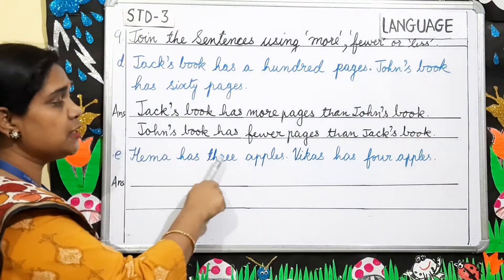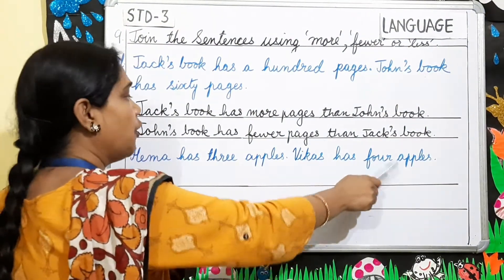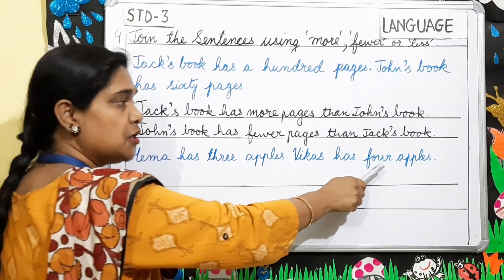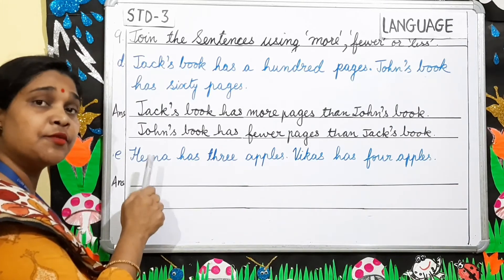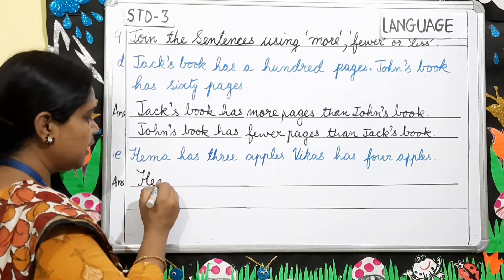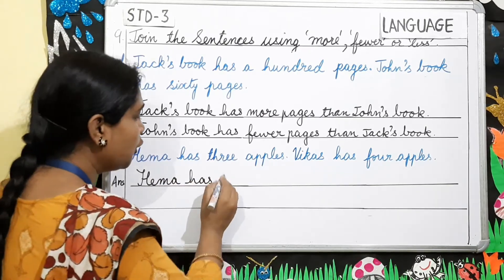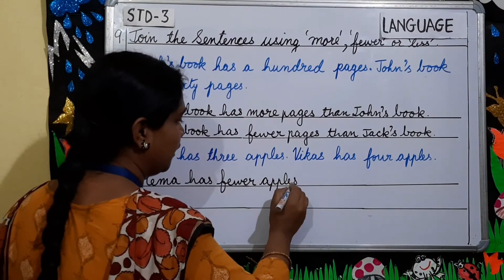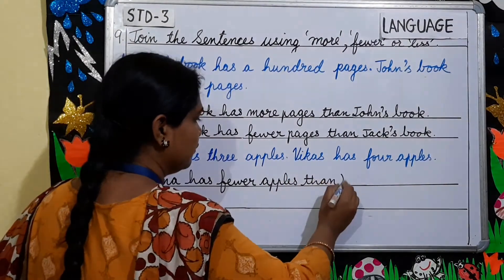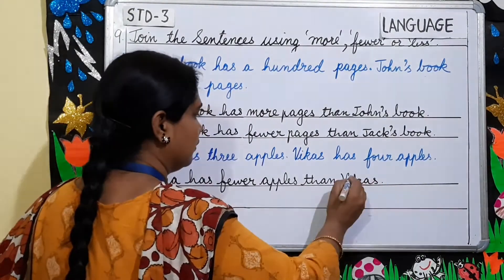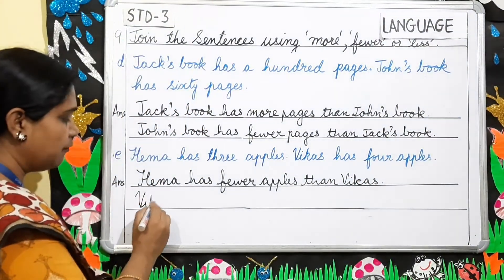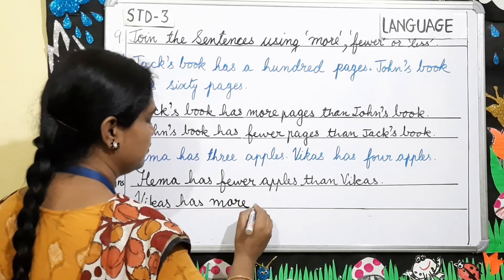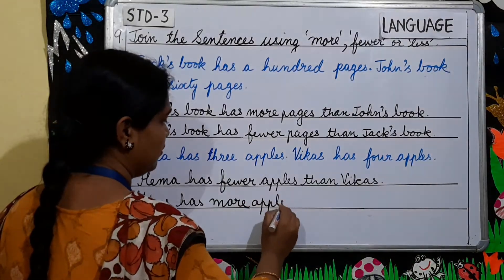Number E: Hema has three apples. Vikas has four apples. Hema has three apples and Vikas has got four apples, so Hema here has fewer apples. So you will write: Hema has fewer apples than Vikas. And for Vikas you will write: Vikas has more apples than Hema.